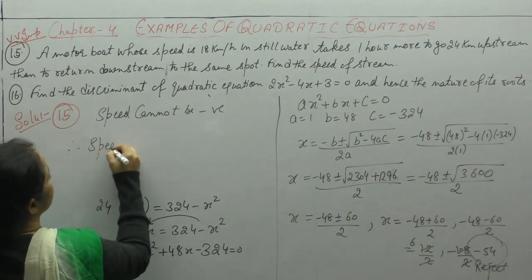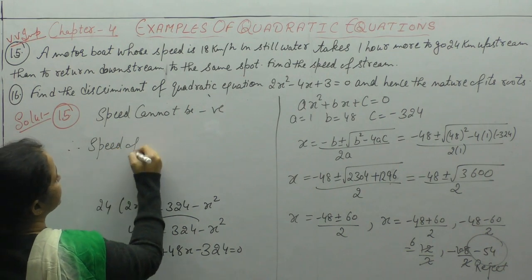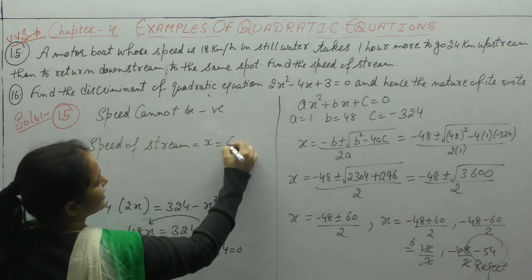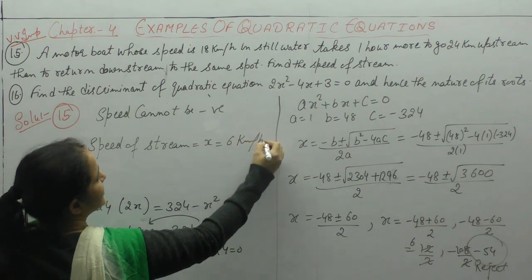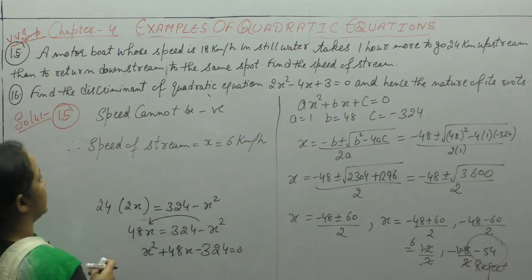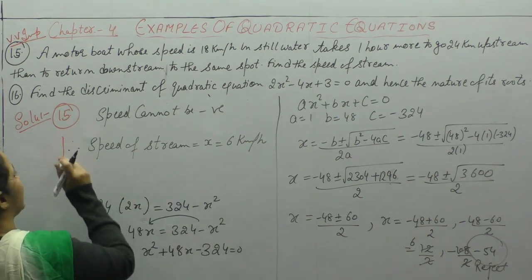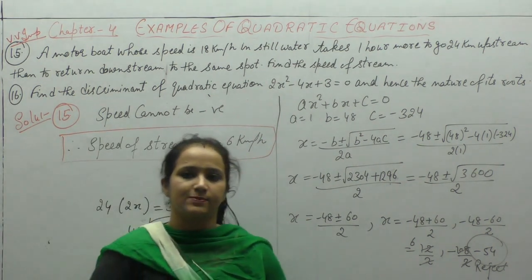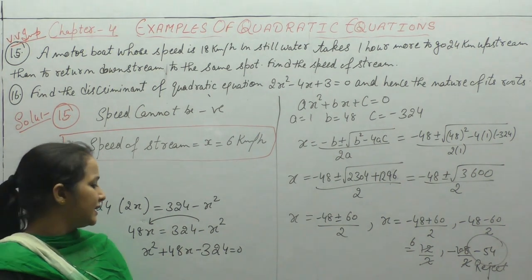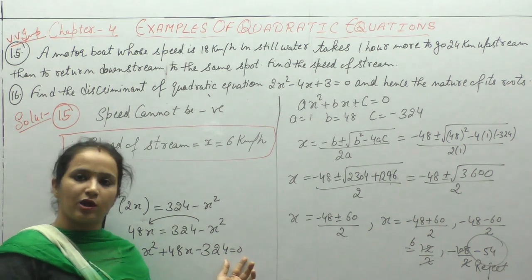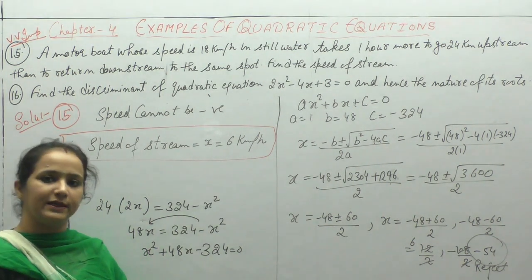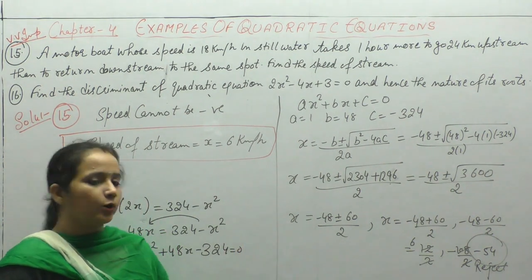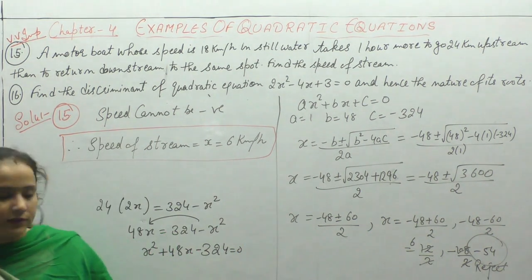Therefore, the speed of the stream is x equals 6 km per hour. So the river's speed is 6 km per hour. You can solve the quadratic equation by any method: factorization, completing the square, or the quadratic formula — whichever is easiest for you. Now note it down.